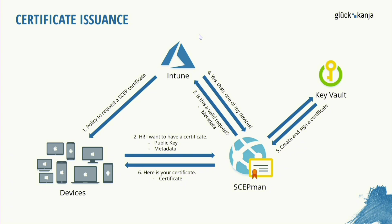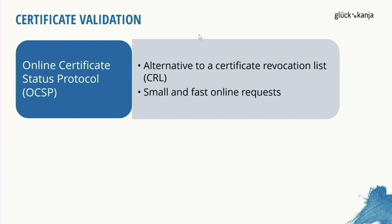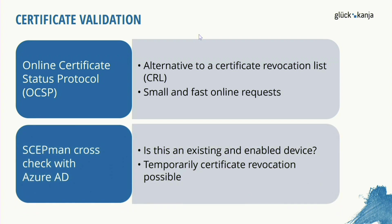After our devices have their certificates, they want to use them, and for this we need to validate the certificate. We have implemented the Online Certificate Status Protocol (OCSP) into SCEPman. This is an alternative to classic Certificate Revocation Lists (CRLs). OCSP has some benefits — we can do online, live requests to SCEPman. These requests are very small and fast because we do not send full lists of all certificates. If we use a certificate, the client or back-end requests SCEPman to check if the certificate is valid.